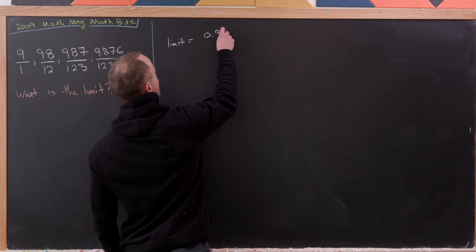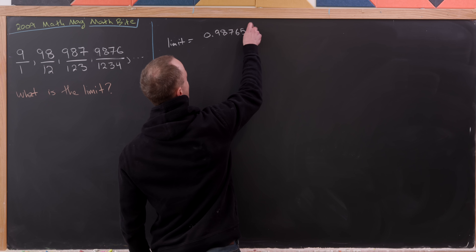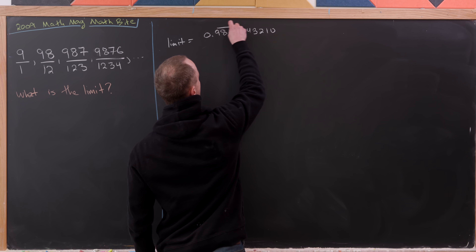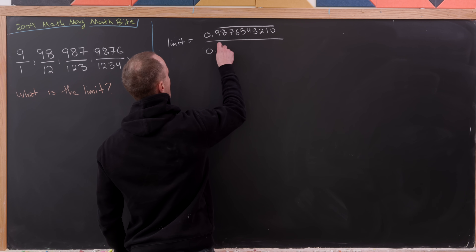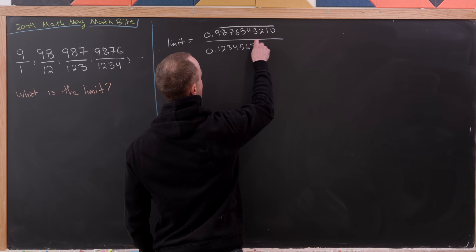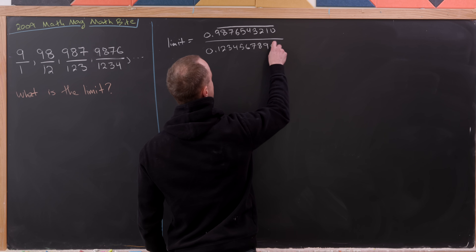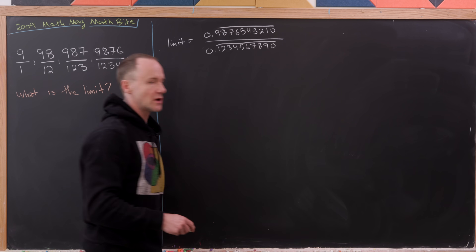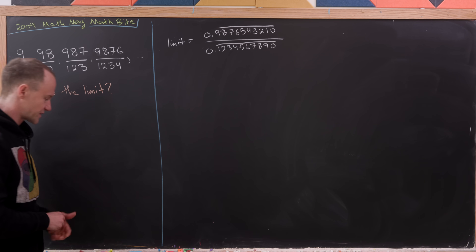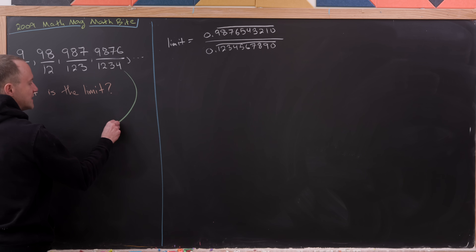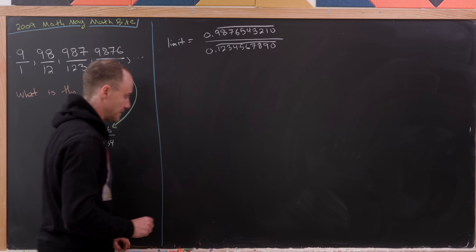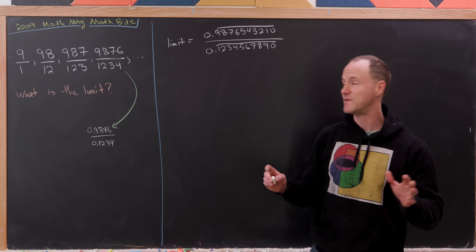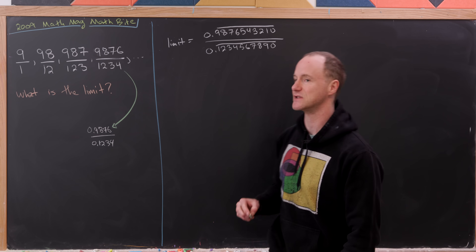We would have 0.9876543210 repeating in the numerator, and in the denominator we would have 0.123456789 and then 0 repeating. What we did first is, for instance, took the fourth term and exchanged it for 0.9876 over 0.1234. The obvious limit of the numerator and denominator would just be these repeating decimals.